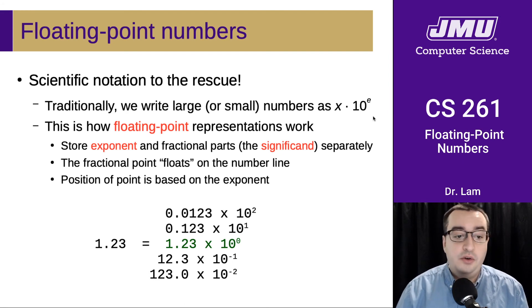This is exactly how floating point representations work in computer systems. We store the exponent and the fractional part separately. These are all different ways of writing the same number here just with different exponents. We need to store two pieces of information: the fractional part, which is sometimes referred to as the significand, and the exponent. That roughly speaking is how floating point representation is going to work.